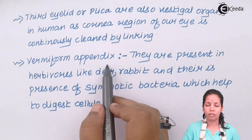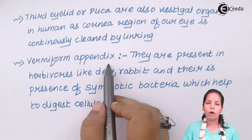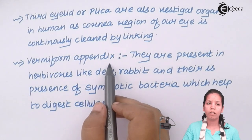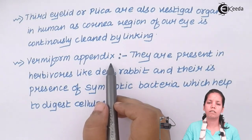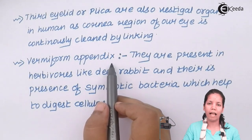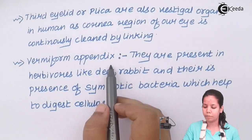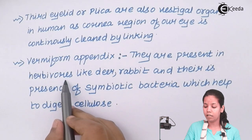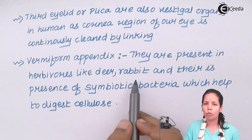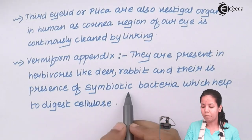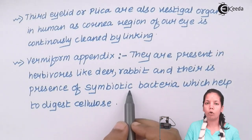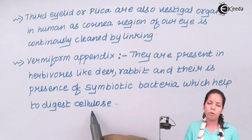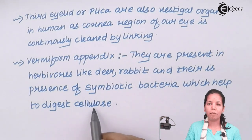Vermiform appendix — we as human beings also have an appendix region, but we don't use it right now. We still possess it in our body and one can remove it by surgery if needed, but as of now there is no particular function of our appendix in human beings. Vermiform appendix was functionally present in herbivorous organisms such as deer and rabbit. Its presence was important because this appendix region had symbiotic bacteria residing in it. Wherever these organisms fed on plant material — stems or branches made up of wood containing large amounts of cellulose — these symbiotic bacteria played a very crucial role in digesting that cellulose material.